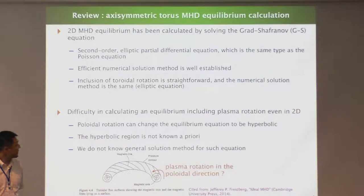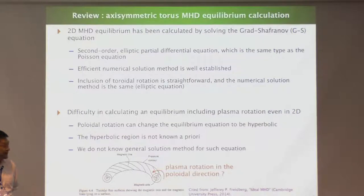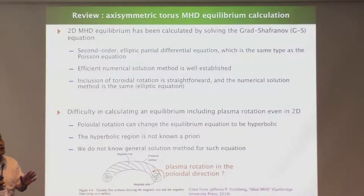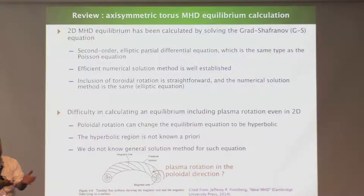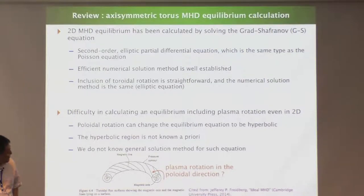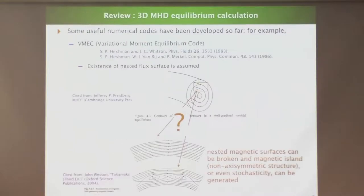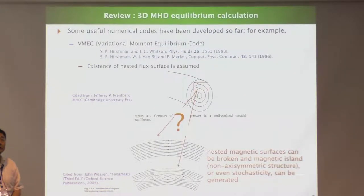Even in the axisymmetric system, if we try to include poloidal flow, the equation type can change to a hyperbolic type in some region while the rest remains elliptic. So it is very difficult to solve this equation systematically even in the 2D system. And if we go to 3D, the problem becomes much more complicated.